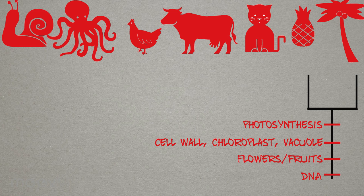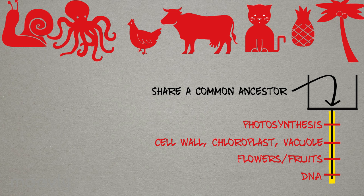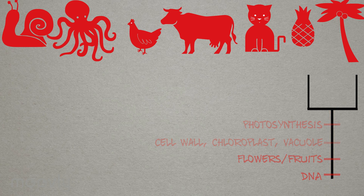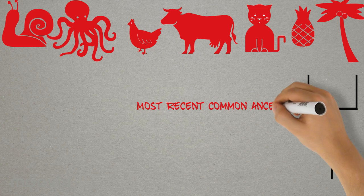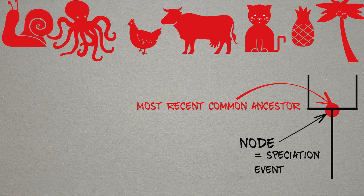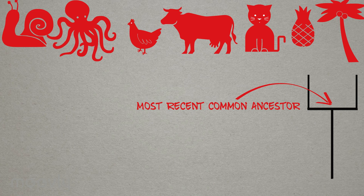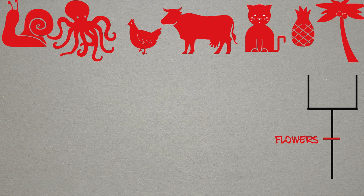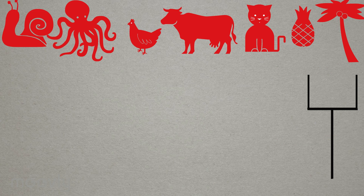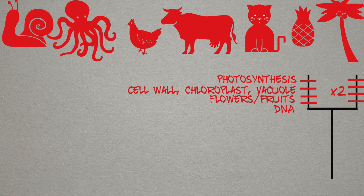Implicit in grouping these two species is that they share these traits because they share a common ancestor, and we can indicate these characters on the branch below these nodes. This most recent common ancestor is represented by a node, which indicates the speciation event that separated the two lineages. We hypothesize that the ancestor of the pineapples and coconuts evolved shared traits like flowers and passed them down to its descendant species. This makes more sense than hypothesizing that pineapples and coconuts independently evolved such a long list of shared traits.